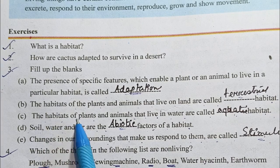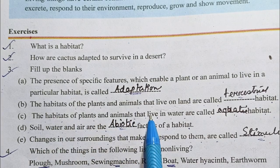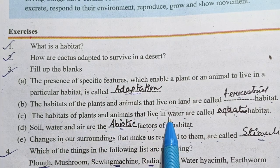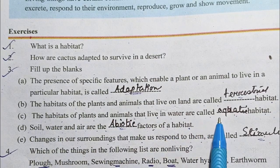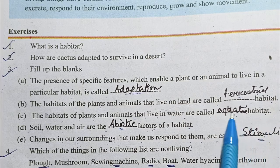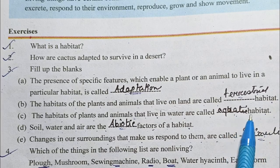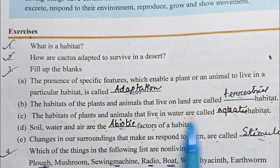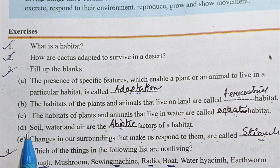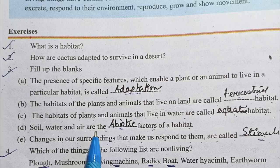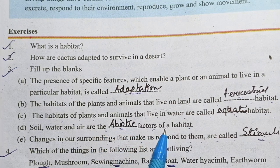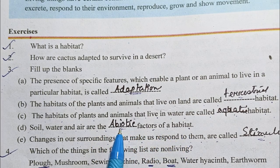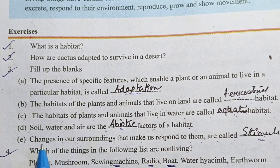Number c: The habitats of plants and animals that live in water are called aquatic habitat. Number d: Soil, water and air are the abiotic factors of habitat. Abiotic meaning non-living — abiotic factors.